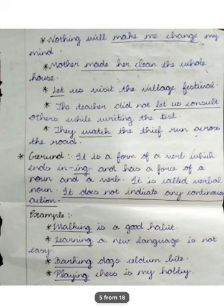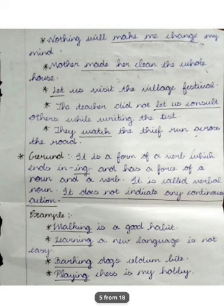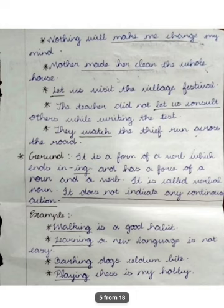'Let us visit the village festival.' 'The teacher did not let us consult others while writing the test.' 'They watched the thief run across the road.' So in the infinitive, certain places 'to' is hidden — that is called the bare infinitive or plain infinitive. Other places it is 'to' plus the present verb form. That is the infinitive.